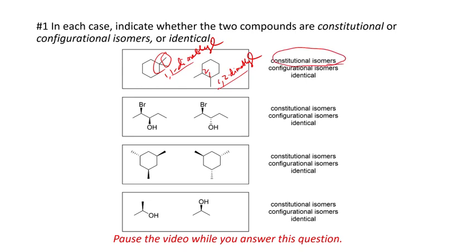Okay, second case. The bonding pattern is exactly the same. The only difference is over here in these two OHs. One is up, one is down. That's what we call a configurational isomer.